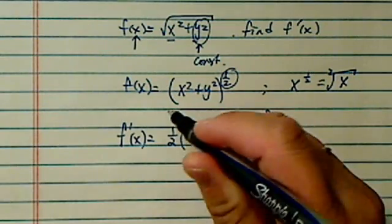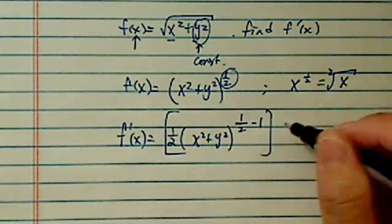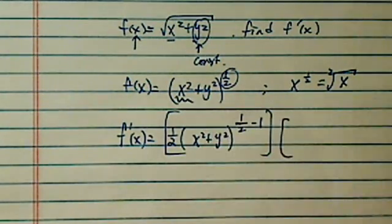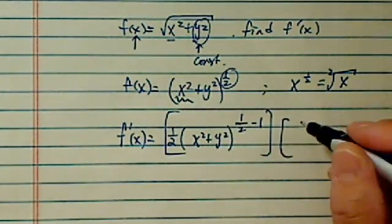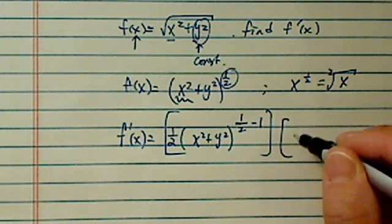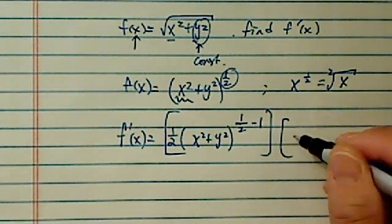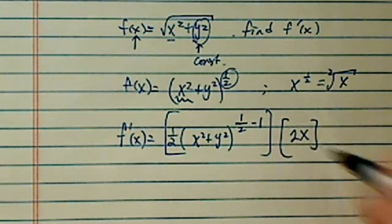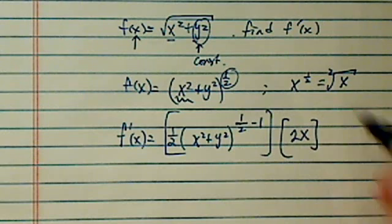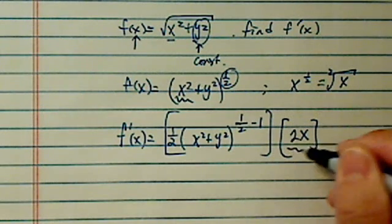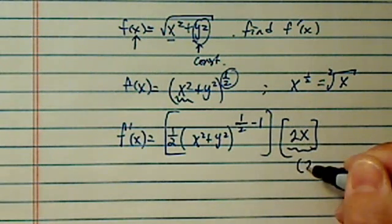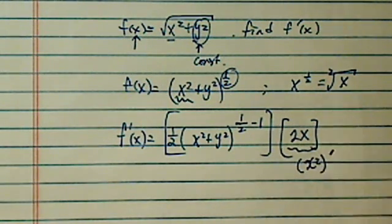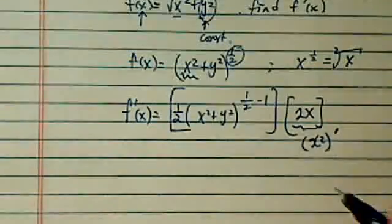We're not quite done yet, because this is a function of x in that it's x squared. So I have to take the derivative of x squared, which becomes 2x. This part is the derivative of x squared.